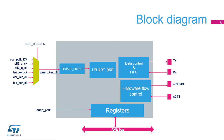Here is the LPUART block diagram. The LPUART clock, LPUART-KERCK, can be selected from several sources: peripheral clock, or APB clock, the PLL-2Q, the PLL-3Q, the high-speed internal RC oscillator, the low-power internal oscillator, or CSI, or the low-speed external 32.768 kHz crystal oscillator.